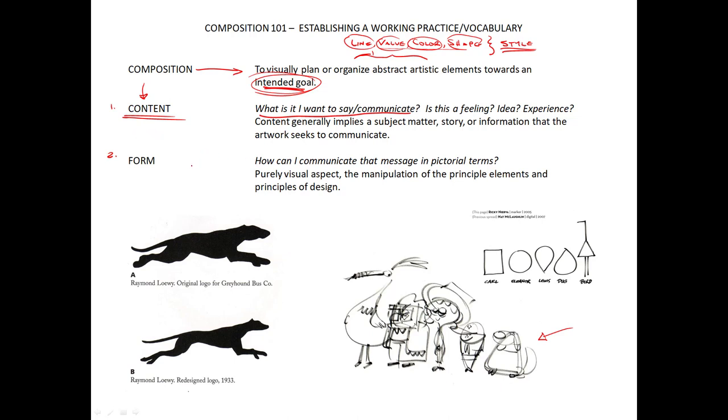So form we could describe as, how do I communicate that message with those weird abstract principles? Or what is the pictorial equivalent of whatever it is I want to say? How do I create the experience of a feeling with line, value, color, and shape? Because I can't write it. We're not in a literature program, we're not writing stories. Some of you might be communicating a story with an image, but this is purely visual.